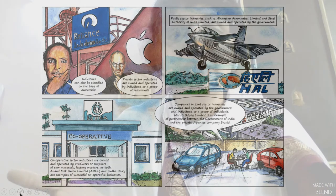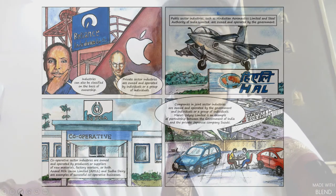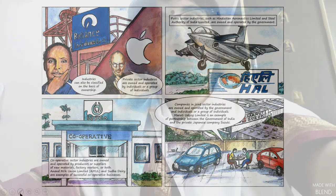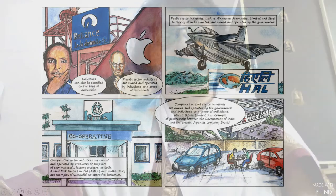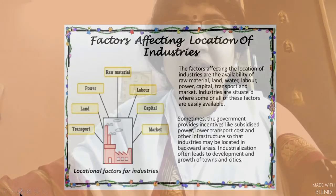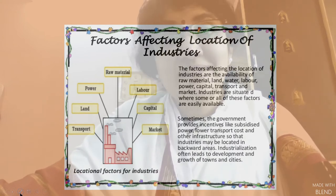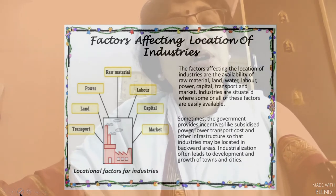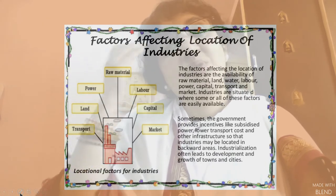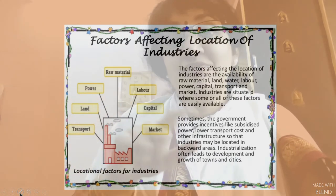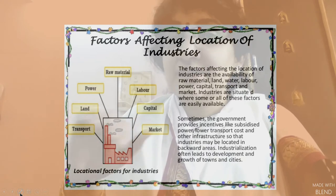Anand Milk Union Limited is located in Anand, Gujarat. Now, what do you think are the contributing factors for the success of an industry? Before we answer that, what factors do we list before settling down in a new rented house? What are the parameters we bear in mind before looking for a house?